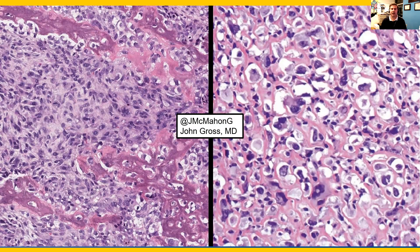We'll start with osteoblastic osteosarcoma. On the left is an intermediate to high-power view of a malignant tumor with brisk mitotic activity producing osteoid matrix, which has mineralized — this pink and purple material. On the right is a higher power view of these malignant cells that are anaplastic in morphology, directly producing this wispy, lace-like osteoid matrix. That's the definition of osteosarcoma: a malignant cell directly producing osteoid that is mineralized.